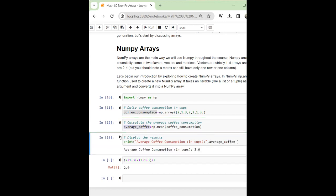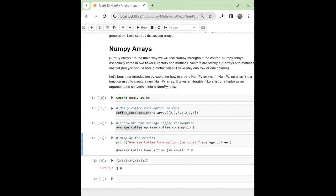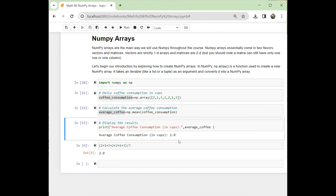So if I run this cell, the result is 'average coffee consumption in cups: 2'. So as you can see, we are using NumPy functions to do basic calculations. That's it.